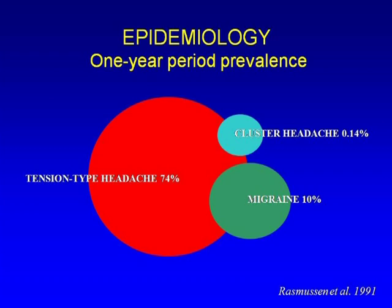This is the first population-based study done in Denmark by one of my colleagues. She found that approximately 74% of the general population complained of headache within the past year, classified as tension-type headache. Ten percent were having migraines and less than one percent had cluster headache. In the U.S. the number is around 12 percent generally, so it's not very different from the Danish population.